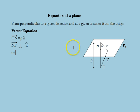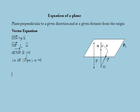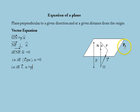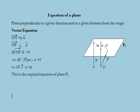Thus point P lies in this plane if and only if the scalar product of NP and unit vector N is equal to 0. That is, point P lies in plane P1 if and only if the scalar product of R and N-cap is equal to P, which is the distance between O and N. This is the required vector equation of the plane P1.